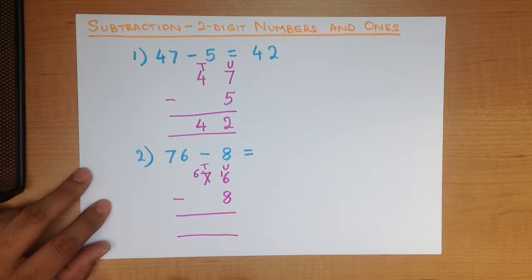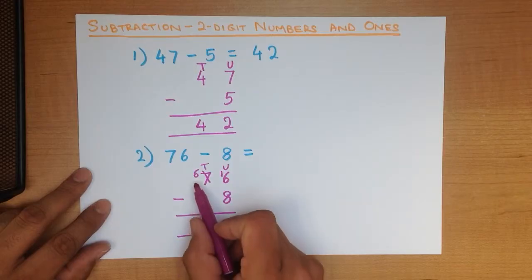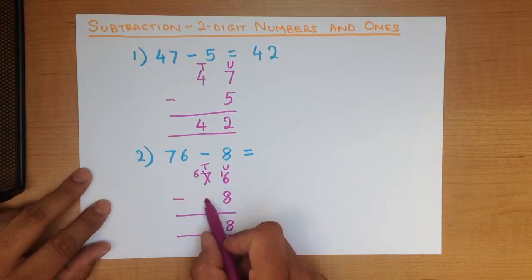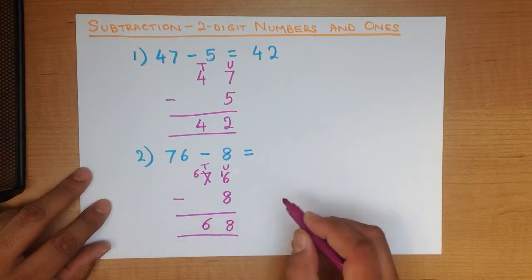And the answer is? That's right. It is 8. Now we do the tens column. We are no longer looking at 7 because that has become 6. So this is now 6 minus 0. There's nothing here. 6 minus 0 is 6.